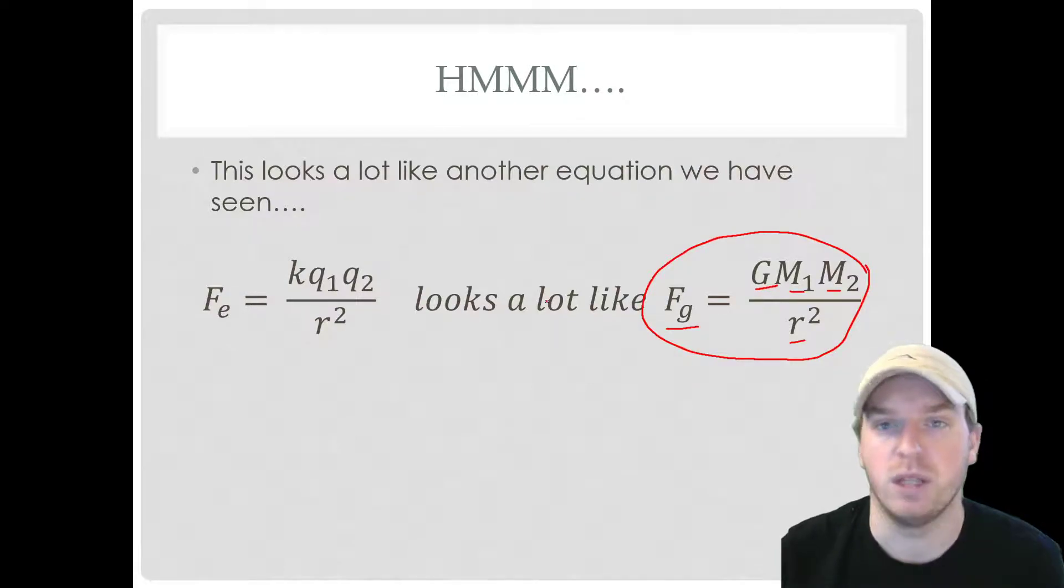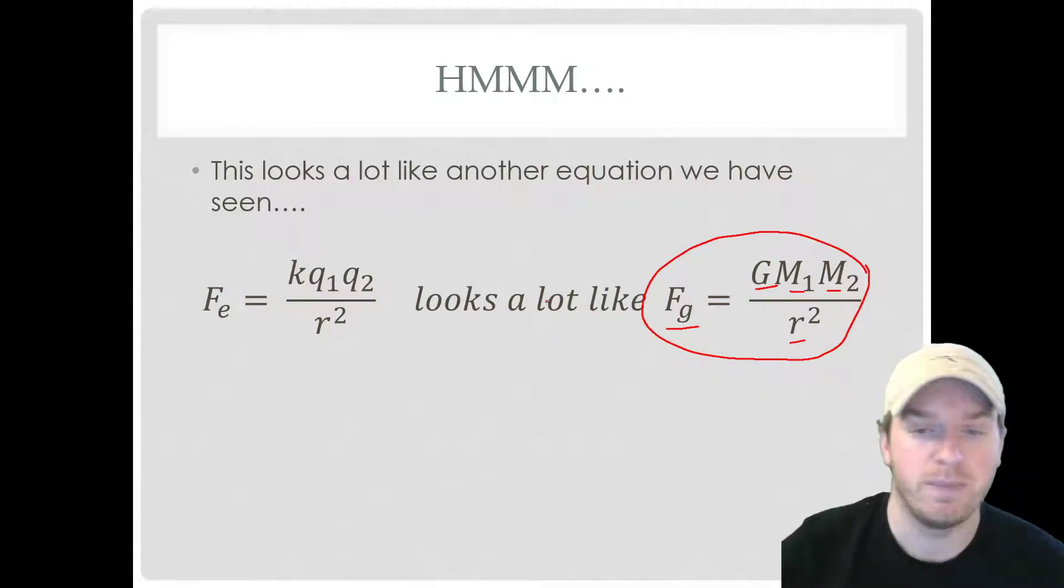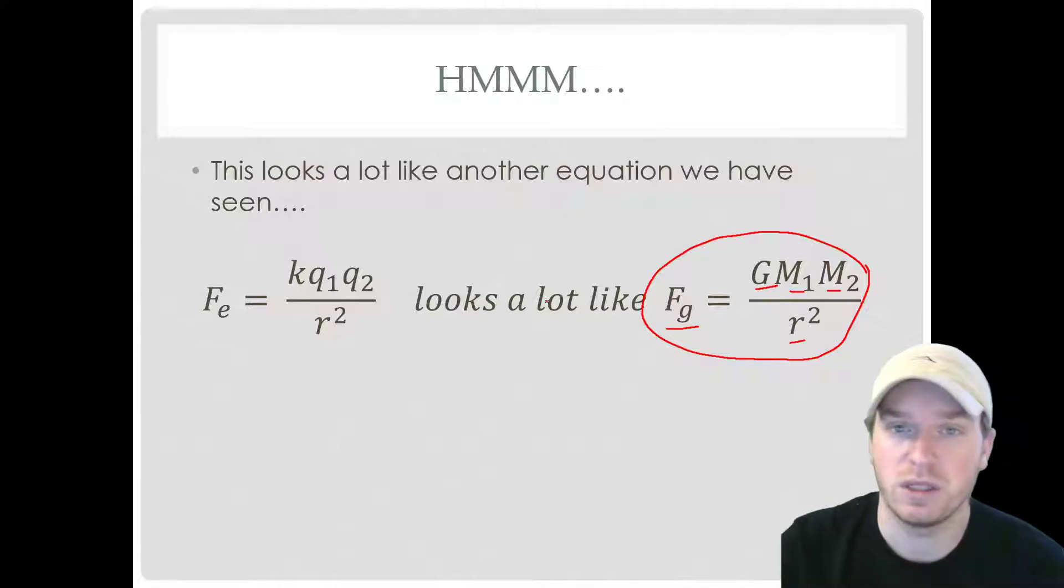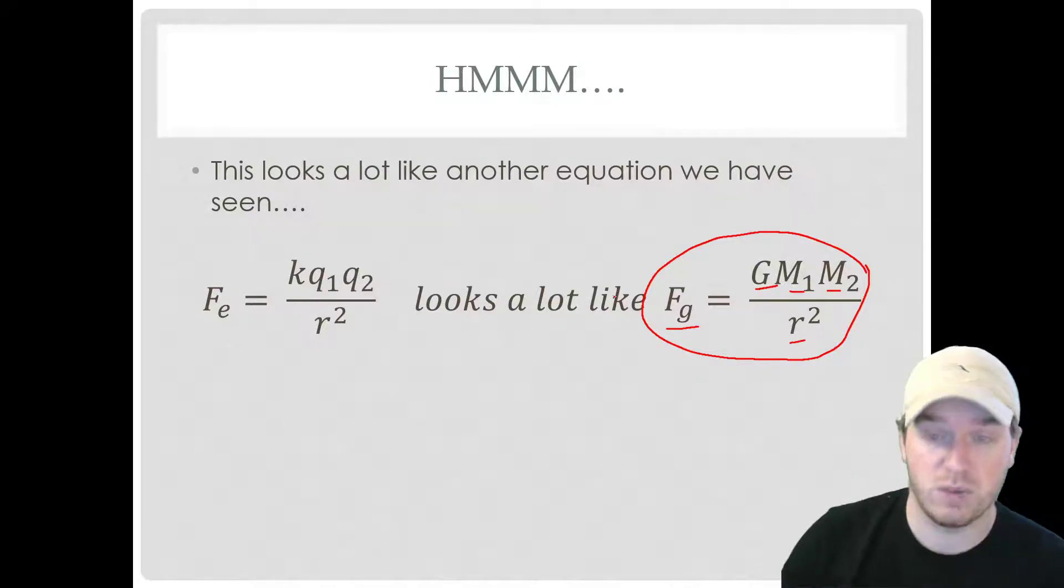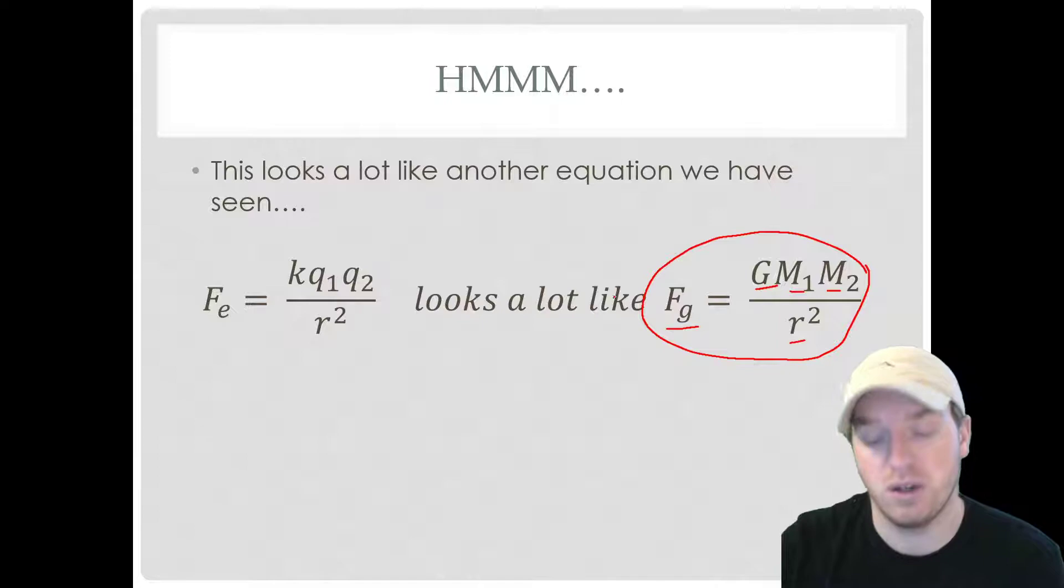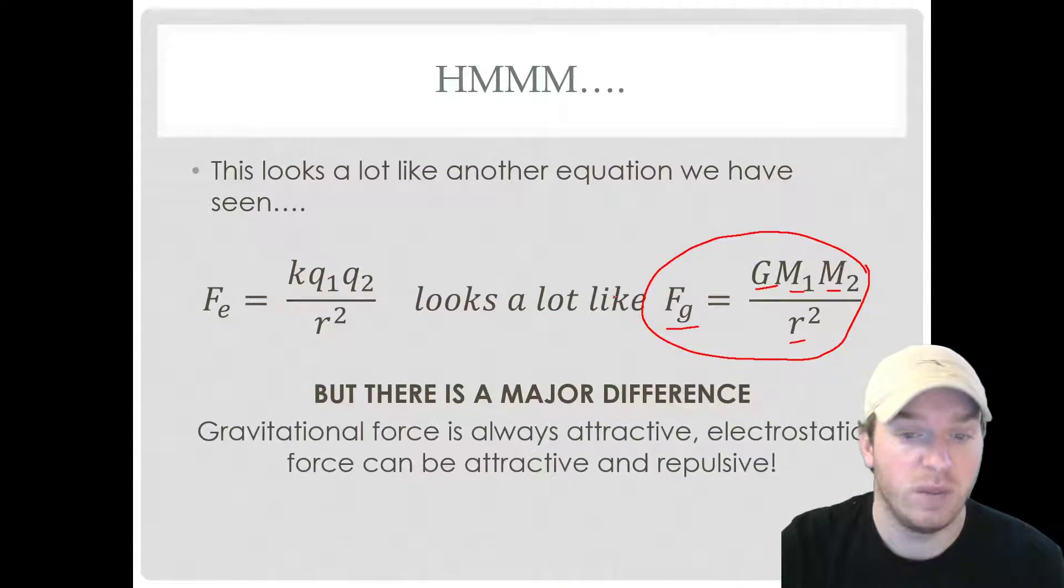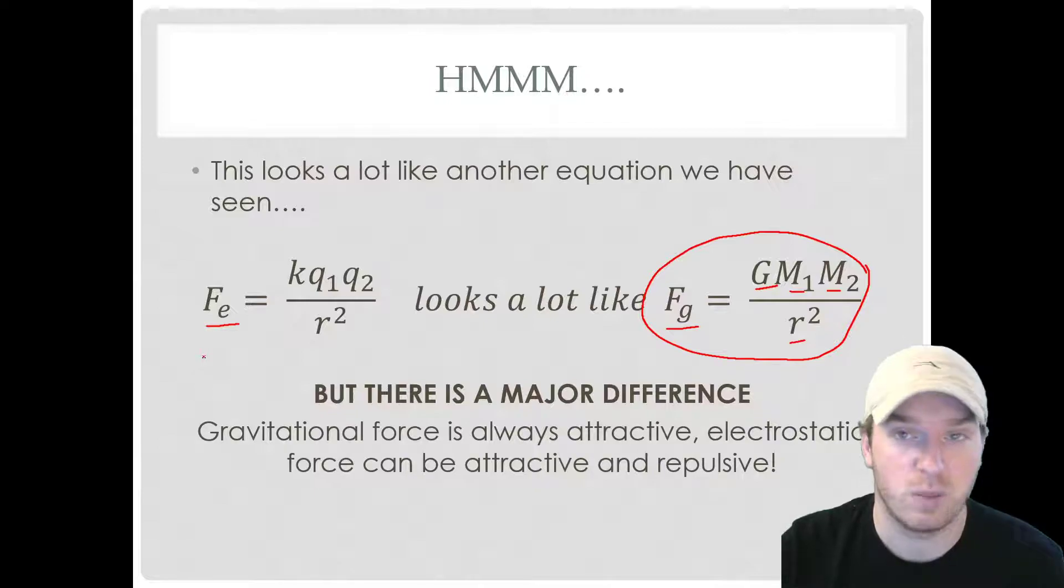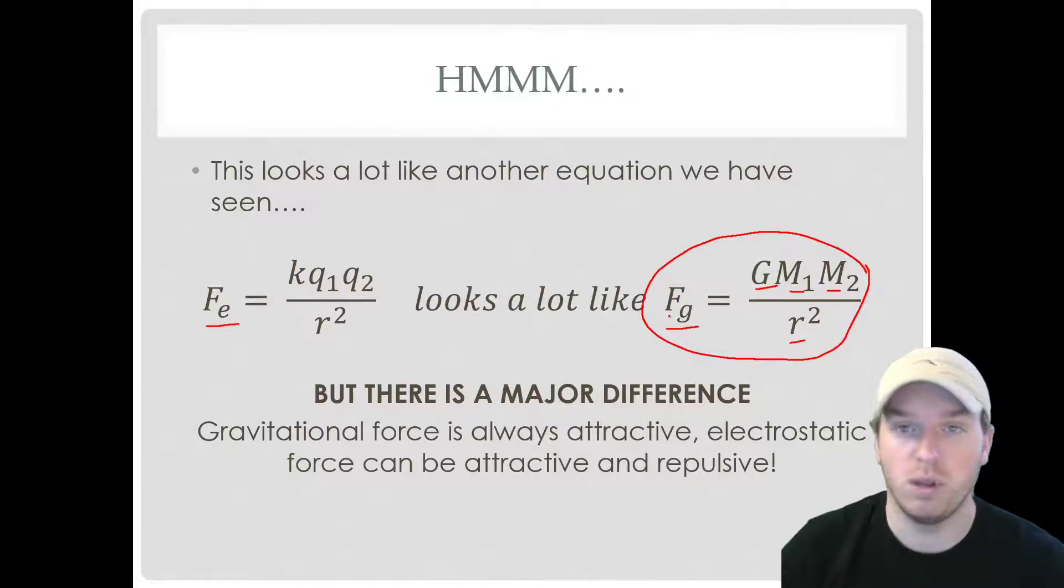But the major point that you have to remember, the big difference between these two equations, is that gravitational force can only be attractive. Electrostatic force can be attractive or repulsive. So now we have to start thinking about, is the force that we have here pulling the objects together or is it separating them out? Because this one can either be pulling things in or separating them outwards, whereas the gravitational force can only be attractive.